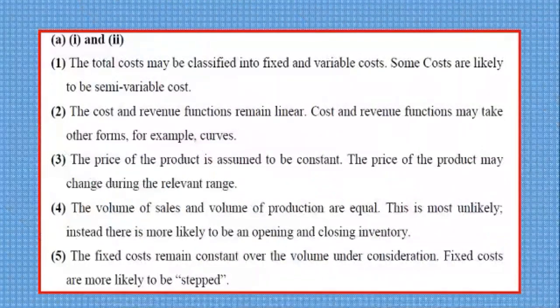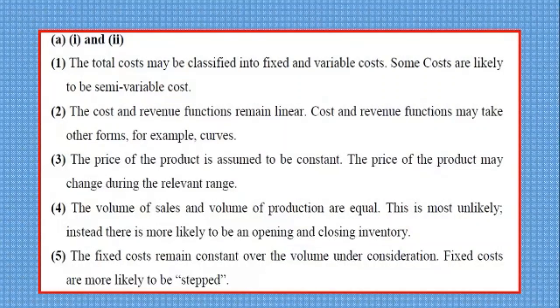Okay, here we have a few of the answers on your screen there. The first one is total costs may be classified into fixed and variable costs. And the answer to the second part in response to that is some costs are likely to be semi-variable costs.